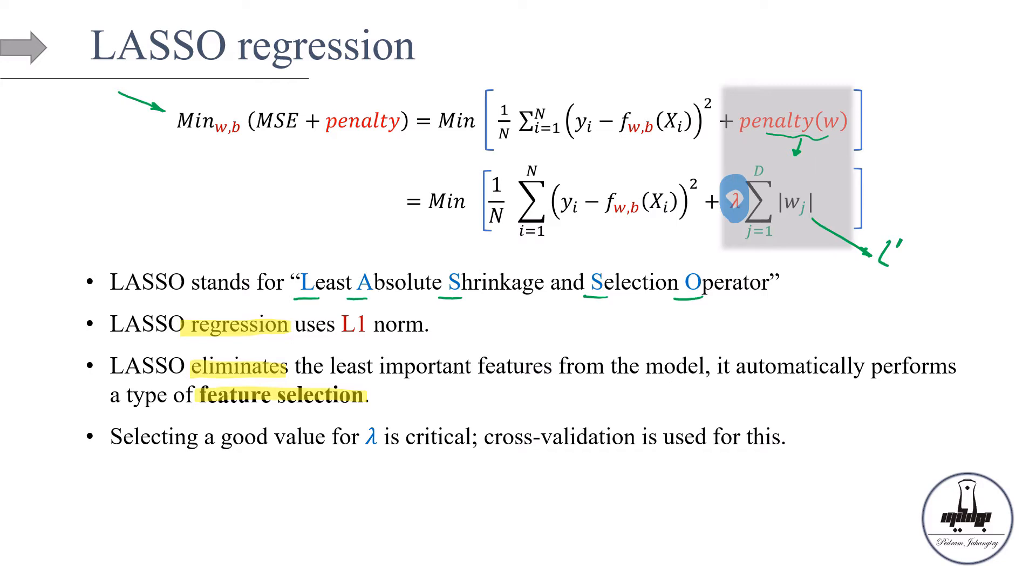And like the ridge regression model in LASSO, selecting a good value of lambda is critical, because remember, lambda is our hyperparameter. So this is our hyperparameter, and you're going to optimize that hyperparameter by using cross-validation down the road.